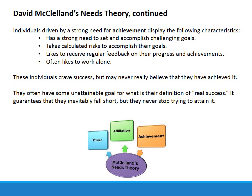Individuals driven by a strong need for achievement display the following characteristics: they have a strong need to set and accomplish challenging goals, they take calculated risks to accomplish their goals, they like to receive regular feedback on their progress and achievements, and they often like to work alone. These individuals crave success but may never really believe that they have achieved it — they often have some unattainable goal as their definition of real success, which guarantees they inevitably fall short but they never stop trying. People who are achievement-driven are fabulous to have work for you, because no matter how much they get done they always think they can do more.